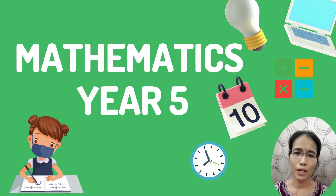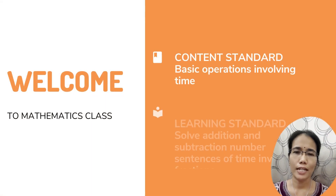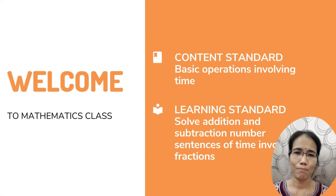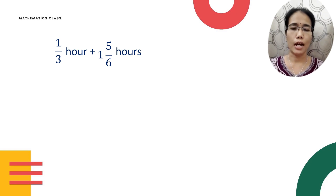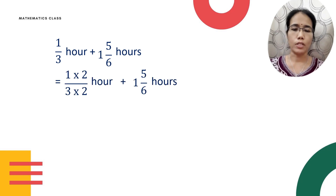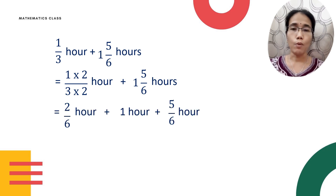Hi children, welcome to class. Today let's continue our lesson with addition and subtraction involving time. Let's look at Example 1: we have one-third hour plus one and five-sixths hours. As you can see, we have two fractions with different denominators, so find the common denominator. We will have two-sixths hours.